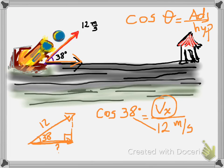All that we have to do is cross multiply. So if we multiply cosine of 38 times 12 meters per second, this is going to give us 9.4 meters per second. That's going to be our Vx, the x component of this velocity vector right here.